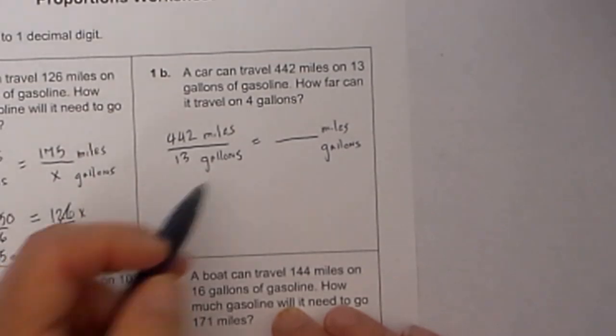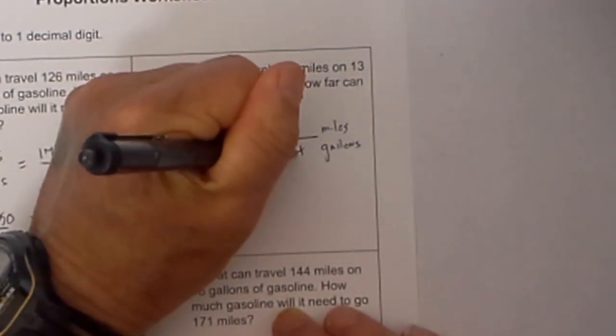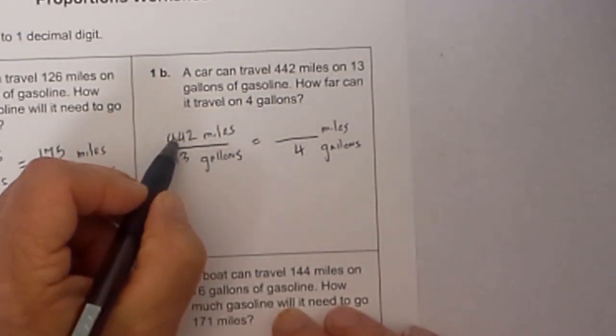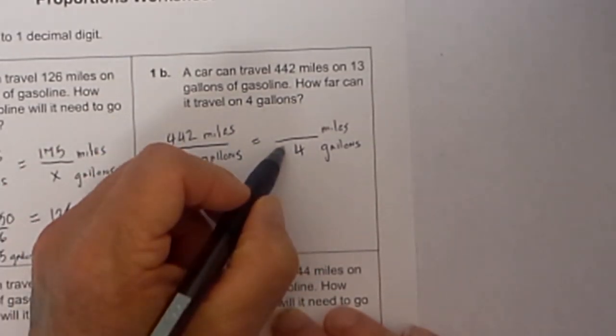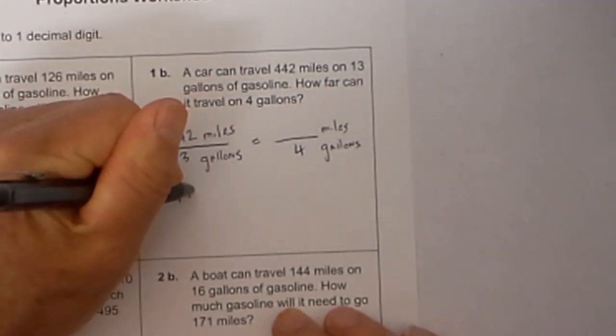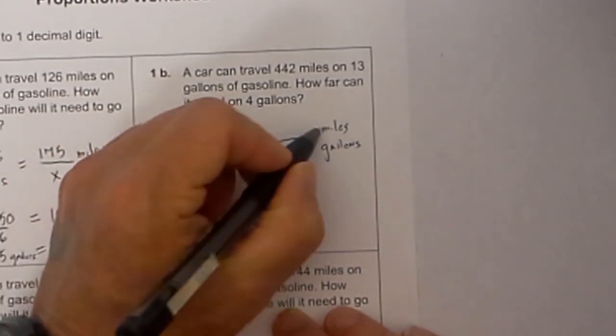Now let's see what other information they have given us. How far can it go on 4 gallons? So 4 is given. I then complete a cross product and 442 times 4 is 1768, and then 13 times miles,